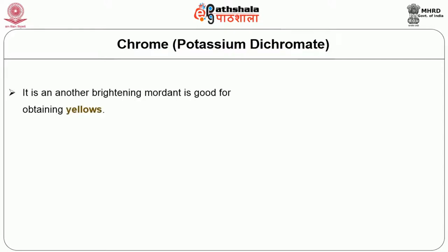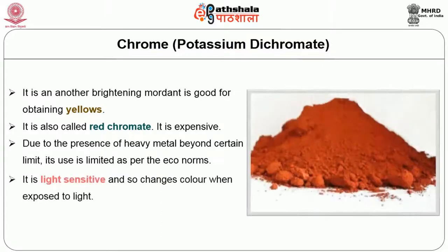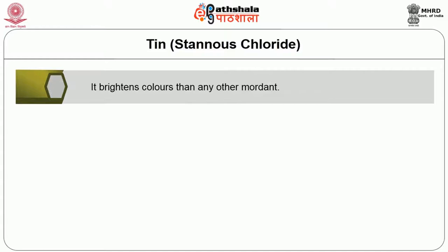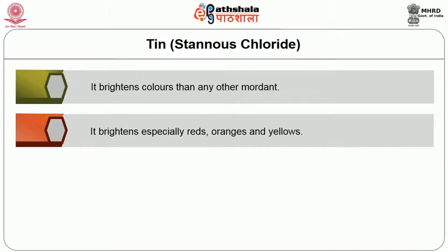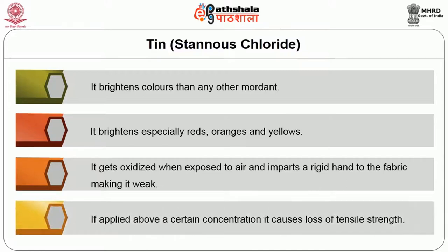Chrome, a brightening mordant, is good for obtaining yellows. It is called red chromate and is expensive. Due to the presence of heavy metals, its use is limited beyond a certain limit as per eco norms. It is light sensitive and so changes colour when exposed to light. Tin brightens colours more than any other mordant, especially reds, orange and yellows. However, it gets oxidised when exposed to air and imparts a rigid hand to the fabric, making it weak. If applied above a certain concentration, it causes loss of tensile strength.